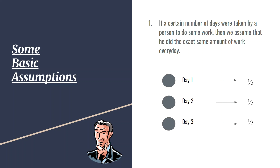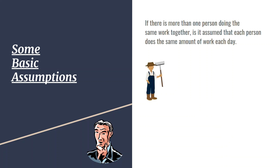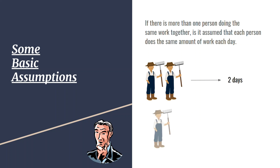Moving to the next assumption, which states that if there is more than one person doing the same work together, it is assumed that each person does the same amount of work each day. For example, if there are two persons completing a job in two days, then one person would complete that job in four days.